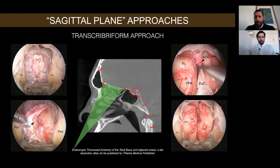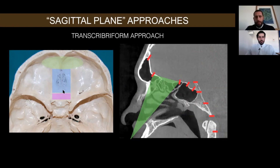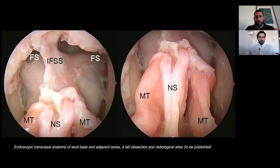Going a little bit posterior, we can define the well-known transcribriform approach, which allows us to reach this area of the skull base. More precisely, you can speak about a transfrontal-transcribriform-transplanum approach, because most of the time when treating sinonasal tumors of this area, you extend the approach both anteriorly and posteriorly.